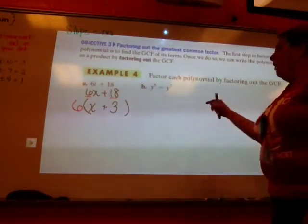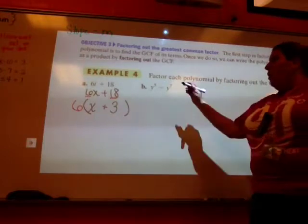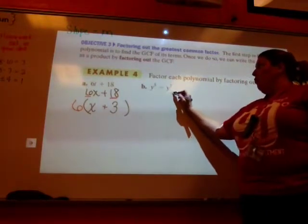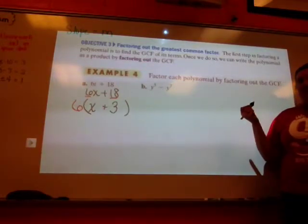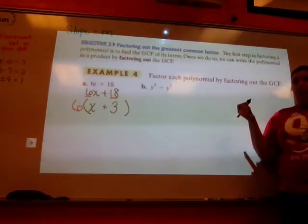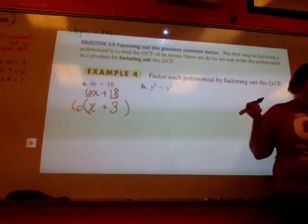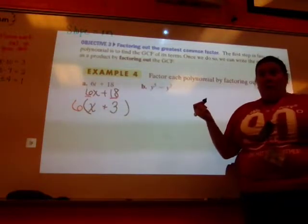So you can kind of self-check because you can distribute it back out and you should get what you started with. Okay? Alright, let's look at this one. You ready? y to the 5th minus y to the 7th. They don't have any whole numbers that I have to worry about dividing by.